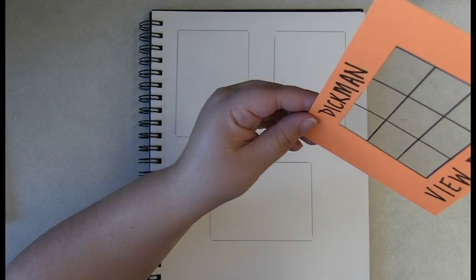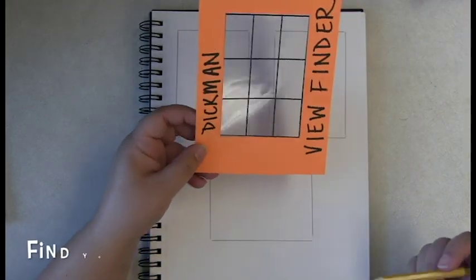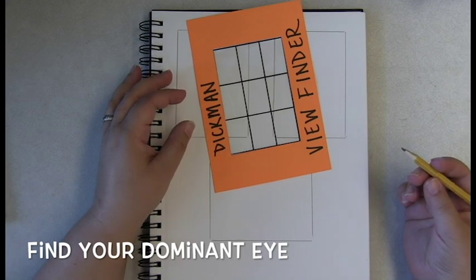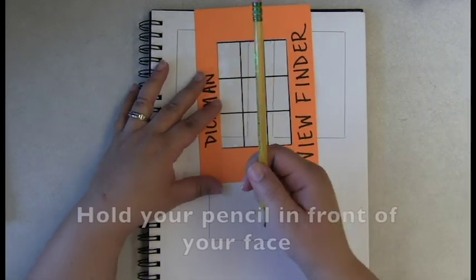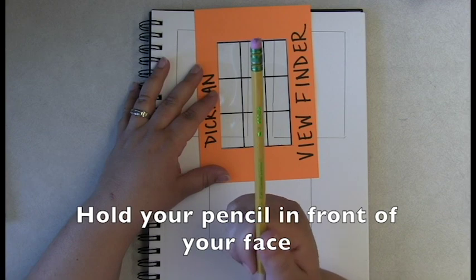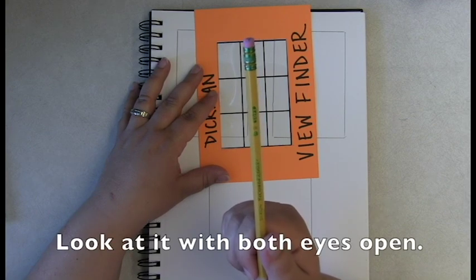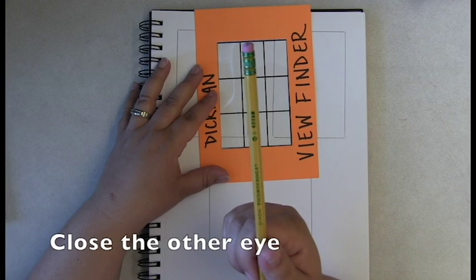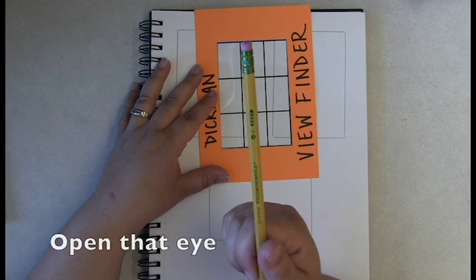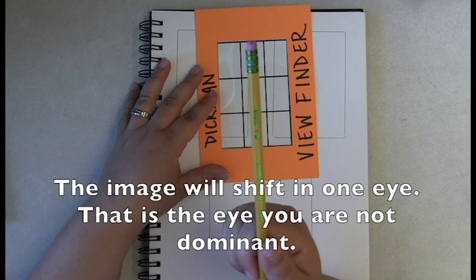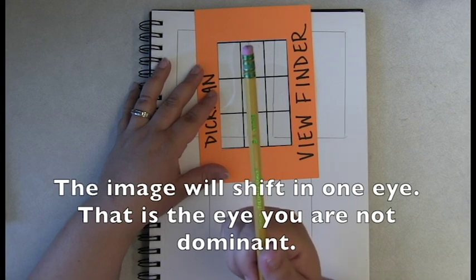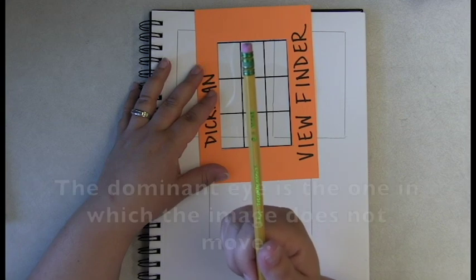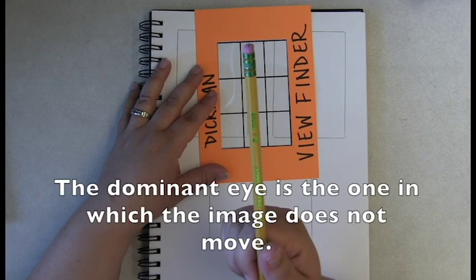There is one trick to using a viewfinder. You must figure out which eye you are dominant. In order to do that, hold your pencil in front of your face. Look at it with both eyes open. Close one eye. Open that eye. Close the other eye. Open that eye. You are going to notice that the image is going to shift. Keep doing this until you figure out which eye is the dominant eye. The dominant eye is the one in which the image does not move.